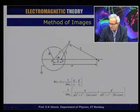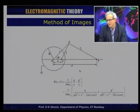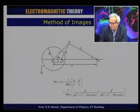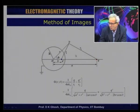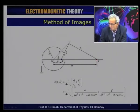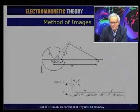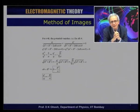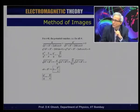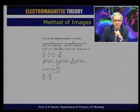We wrote down the potential at an arbitrary point r, θ. There is no φ dependence, and this is given by q/r₁ plus q'/r₂. Since r₁ and r₂ are positive quantities, q and q' must have opposite sign. We wrote down r₁ and r₂ in terms of a, b, and the radius R of the sphere and the angle θ. Since the potential on the surface of the sphere at r = R must equal zero, the expression q/r₁ + q'/r₂, expanded using the triangle law, must equal zero.